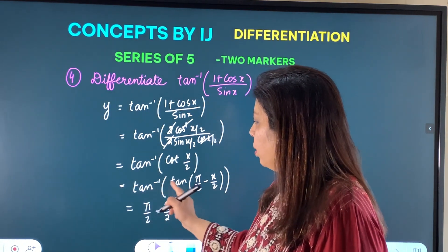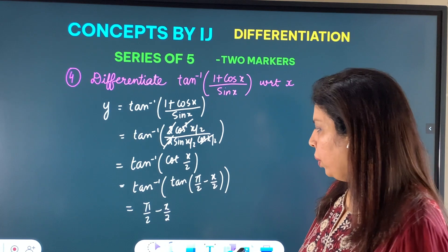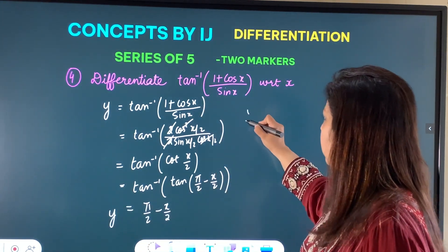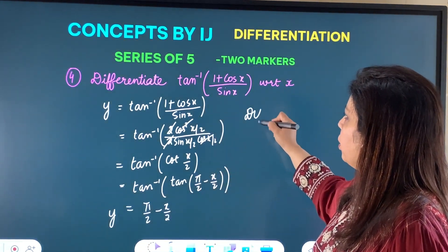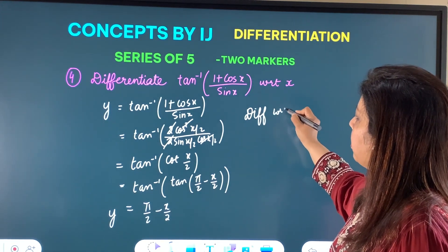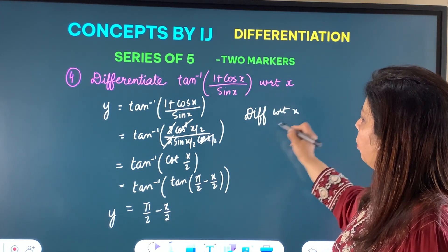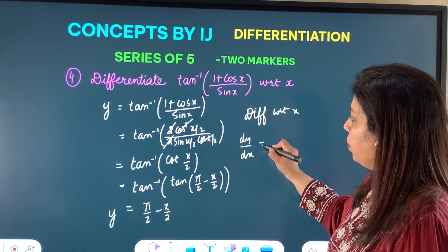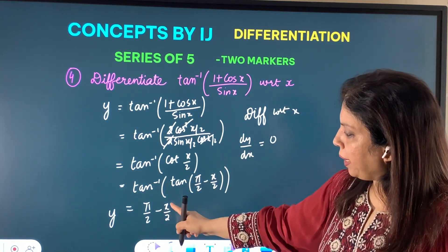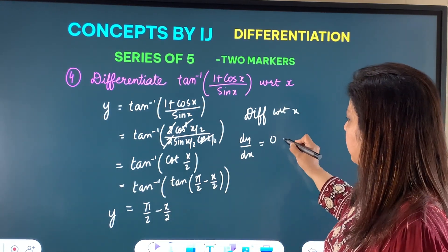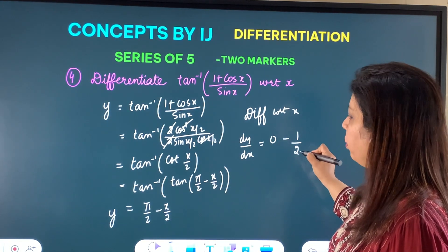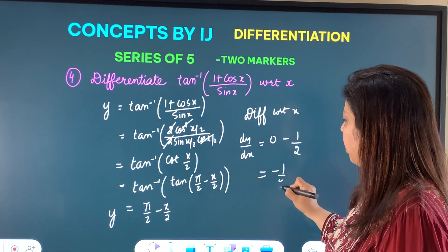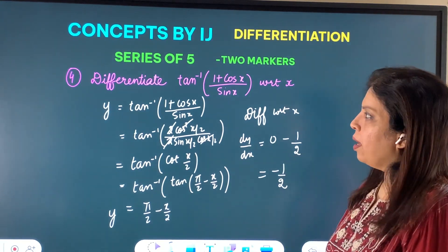Because tan⁻¹(tan θ) = θ, the expression simplifies to y = π/2 − x/2. Differentiating with respect to x: dy/dx = 0 − (1/2)·1 = −1/2. So the answer is −1/2.